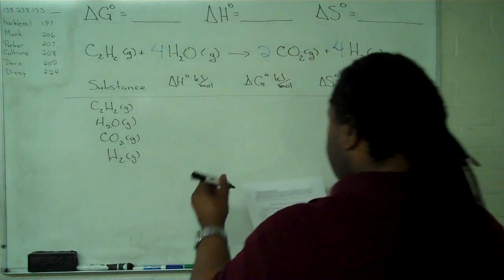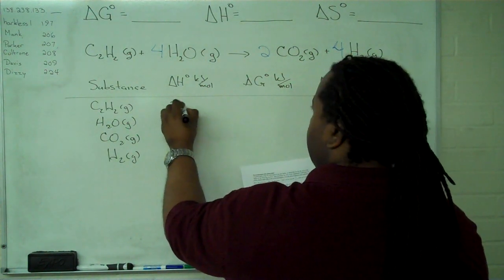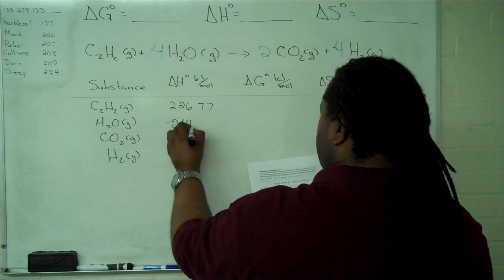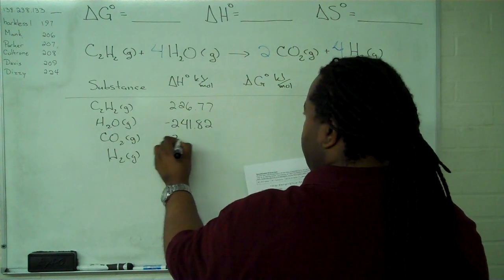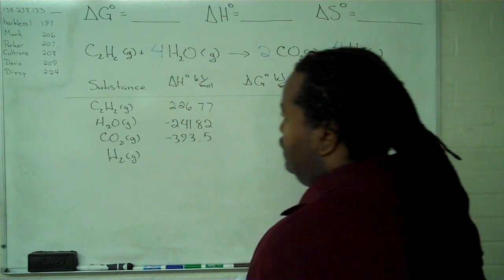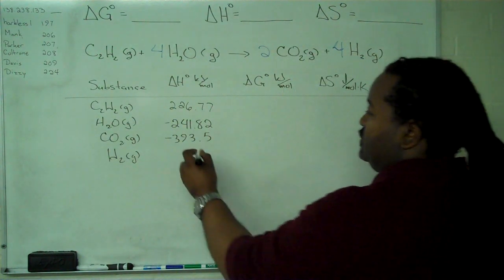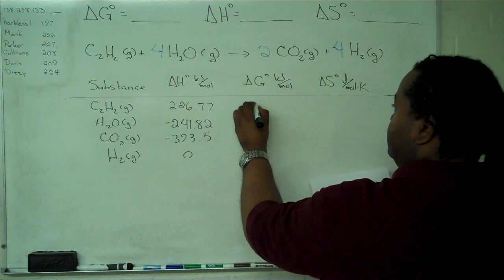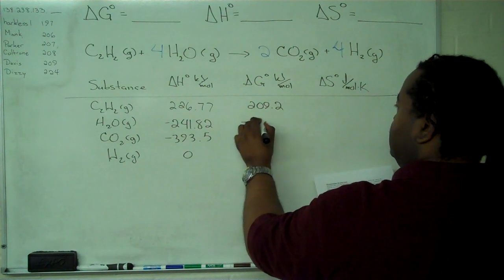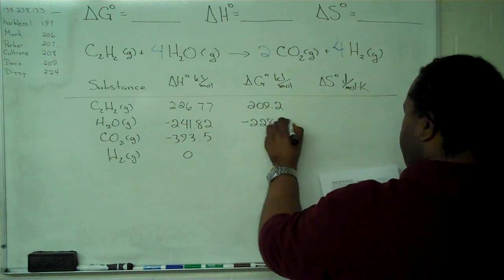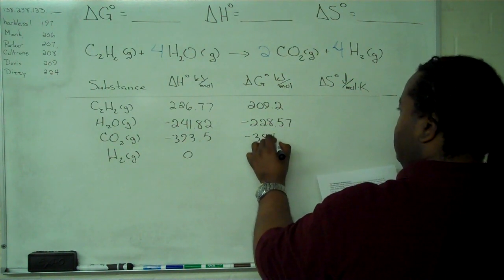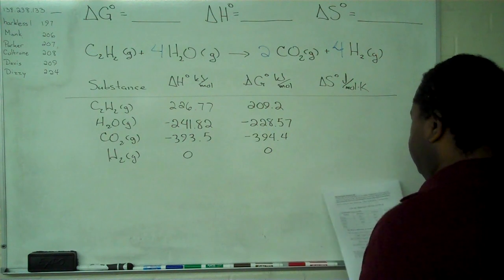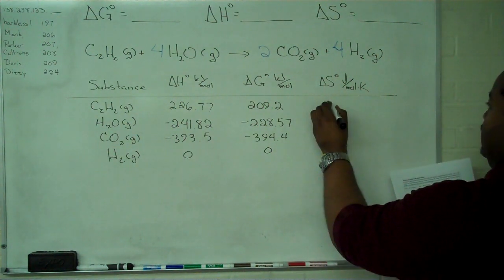So our first values are copied over. And the enthalpy value for hydrogen gas is zero, because it's in a standard state. Next are the delta G standards. And the delta G standard for hydrogen gas is also zero, because it's a standard state. And finally, we have the entropies.